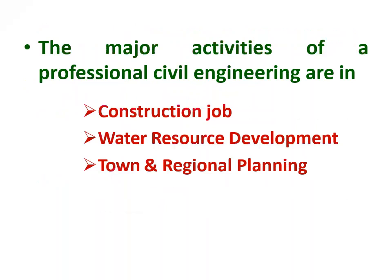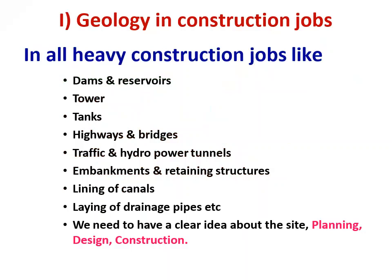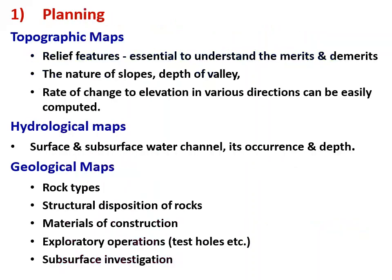The major activities of a professional civil engineer include construction jobs, water resources development, and town and regional planning. Heavy construction features include dams and reservoirs, towers, tanks, highways and bridges, traffic and hydropower tunnels, embankments and retaining structures, lining of canals, and laying of drainage pipes. We need a clear idea about site planning, design and construction.